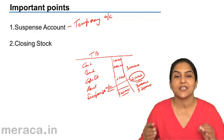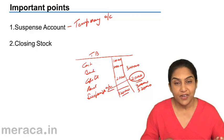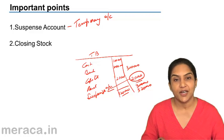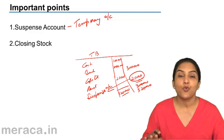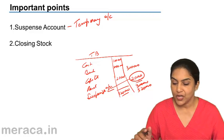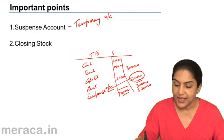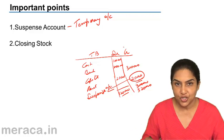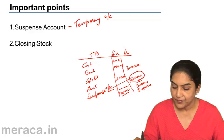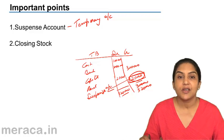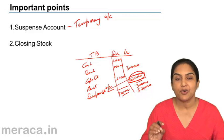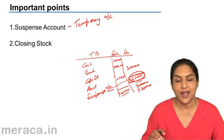What is a suspense account? It is a temporary account. Does it have a debit balance or a credit balance? It could have either, depending on which side is short. In this particular case, the debit balance total was 3 lakh 20 but the credit side is only 3 lakh, therefore the credit side is short. It means we will credit 20,000 to suspense account. It is a temporary account created only to tally the trial balance.